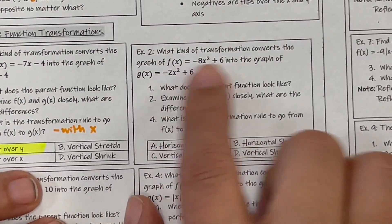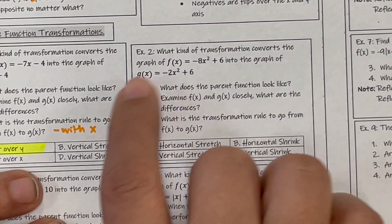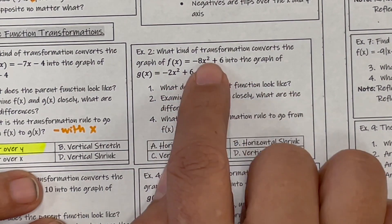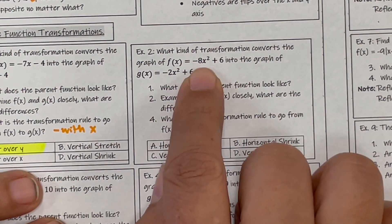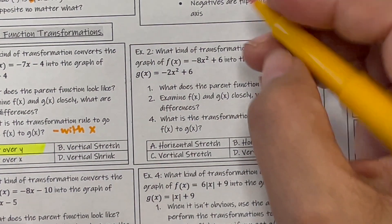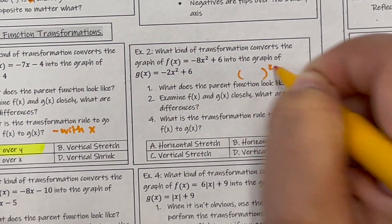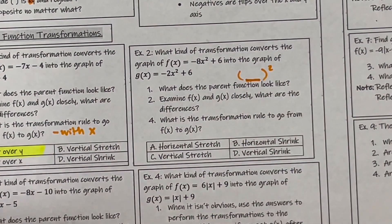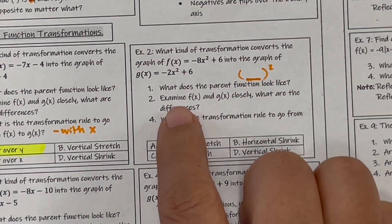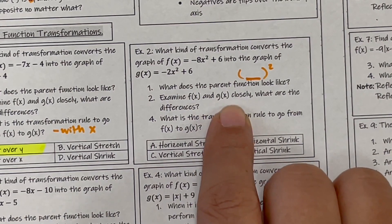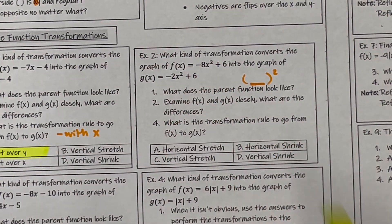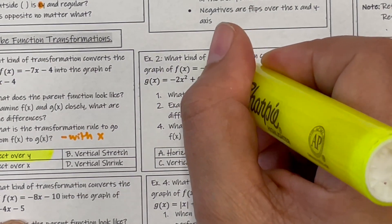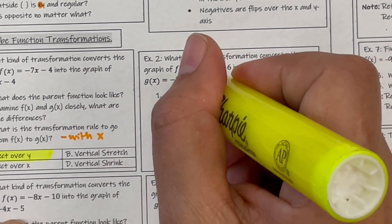Example two: what kind of transformation converts F of X to G of X? Let's look at the parent graph — this is a quadratic, something squared. The thing that's inside the square is inside; everything else is outside. Examine F of X and G of X closely. The only difference is that this number went from eight to two.